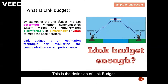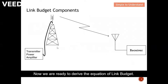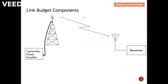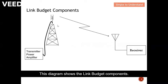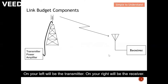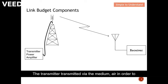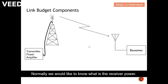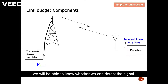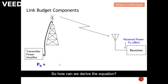Now we are ready to derive the equation of the link budget. This diagram shows the link budget components. On your left will be the transmitter, on your right will be the receiver. Right in between the transmitter and receiver it will be air — the transmitter transmits via the medium air in order to establish communication with the receiver. Normally we would like to know what is the receiver power, because from the receiver power we will be able to know whether we can detect the signal. Hence, for link budget we would like to express in terms of receiver power.